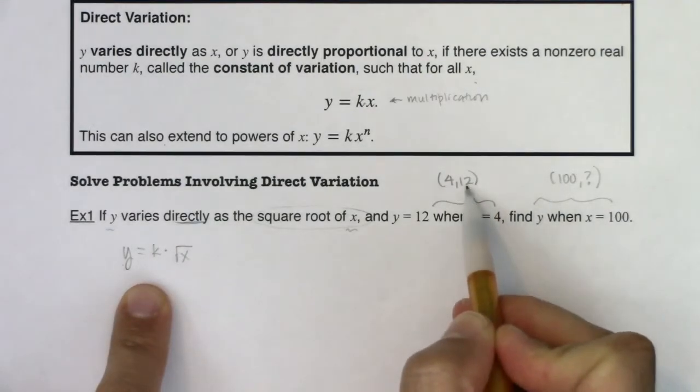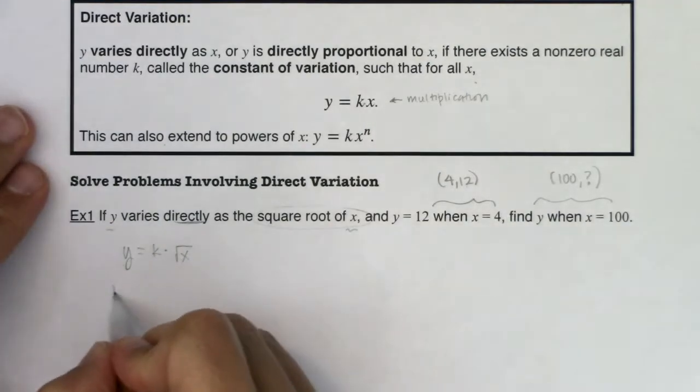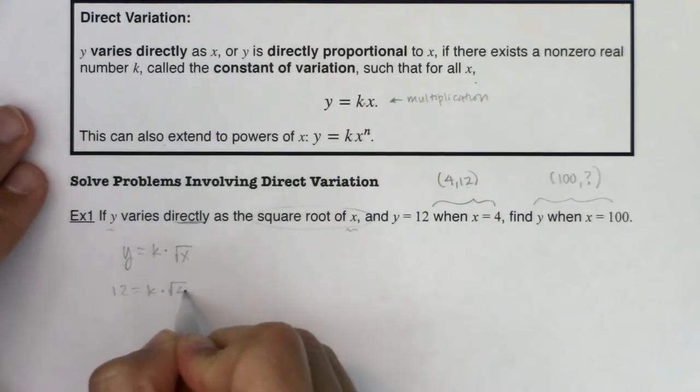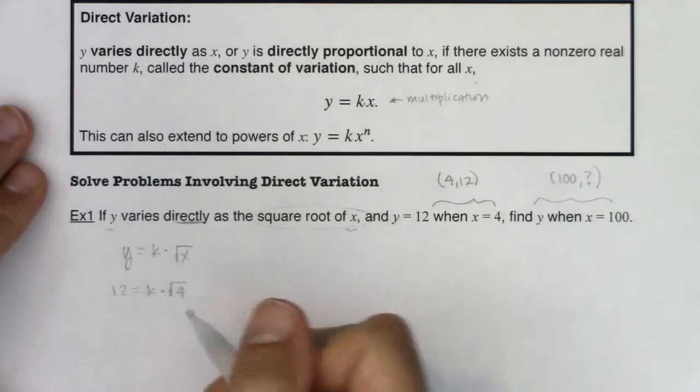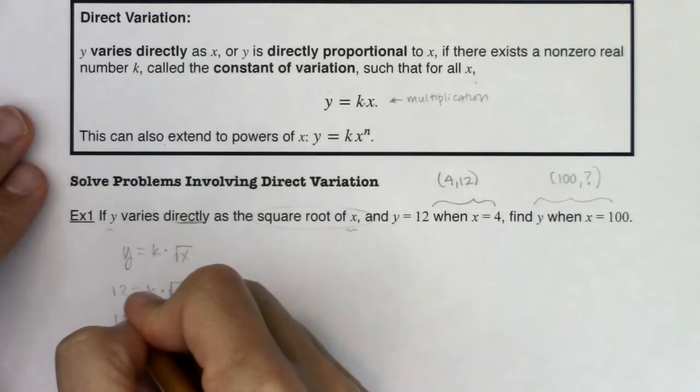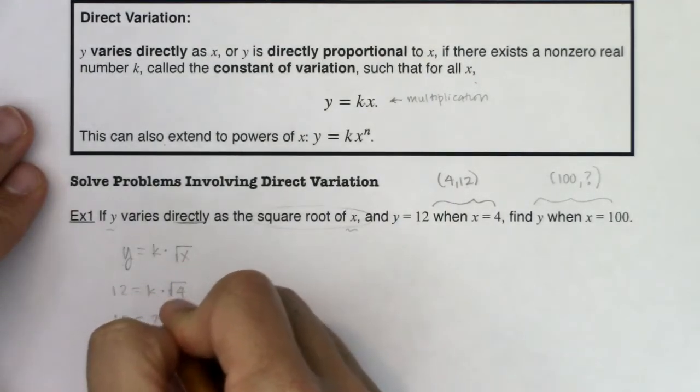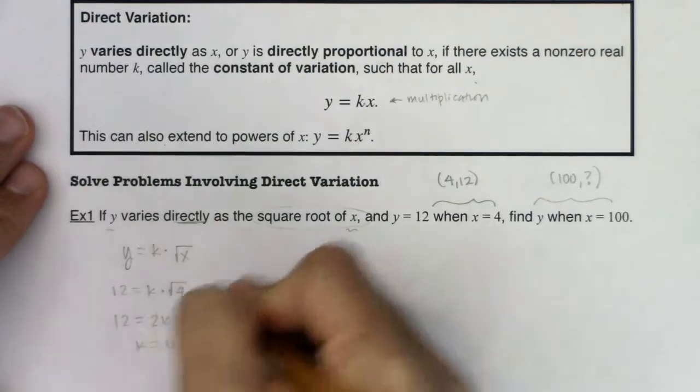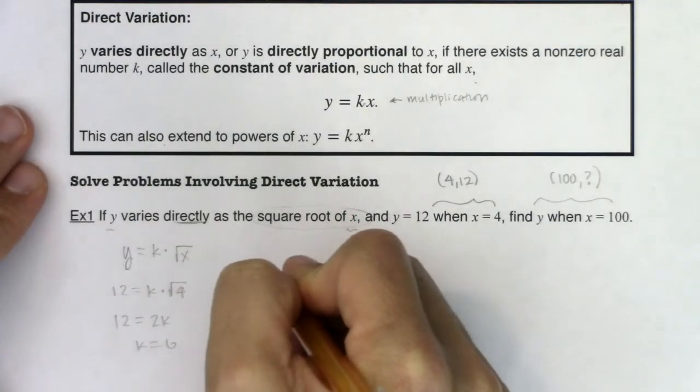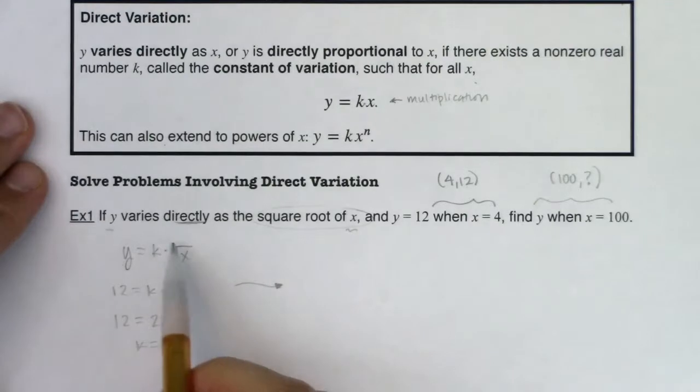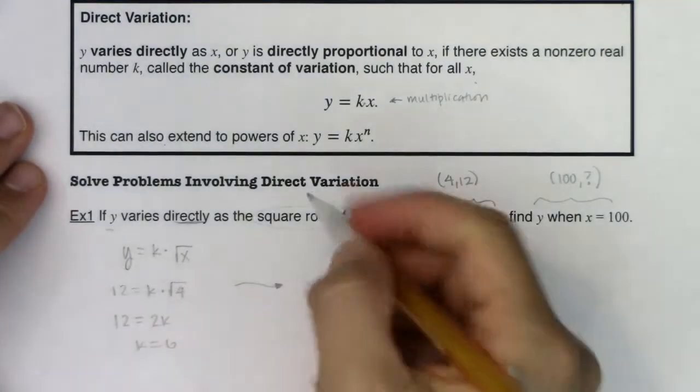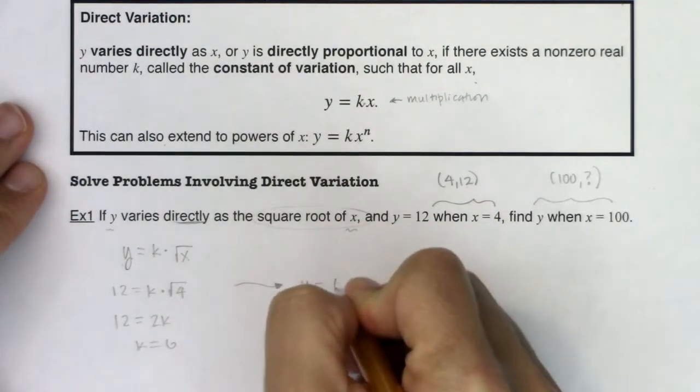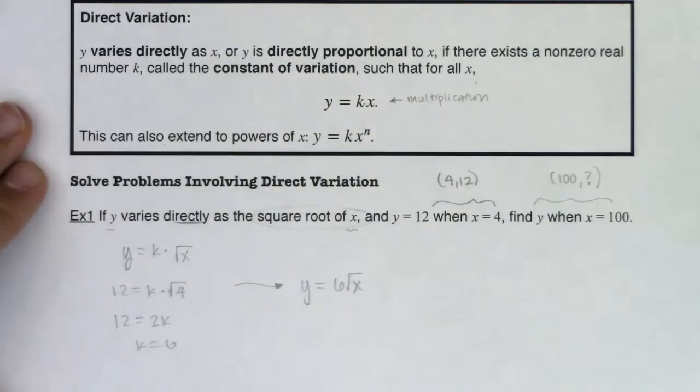So let's do it. 12 would equal k times the square root of 4. And I think you'll give me the square root of 4 is 2. So we're getting 12 equaling 2k. So I can see k is equal to 6. So I can move this problem along. And instead of writing this general equation of y equaling k root x, I know our k for our particular problem is 6.